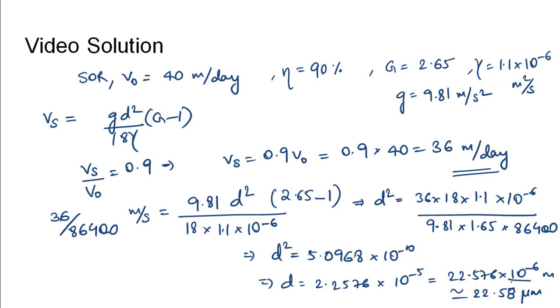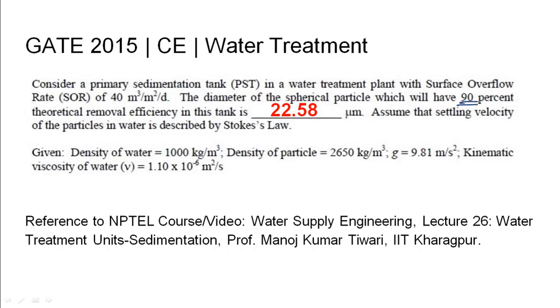This equals 22.58 micrometers. The diameter of the spherical particle which provides 90% theoretical removal efficiency is 22.58 μm.